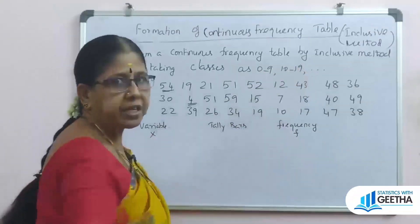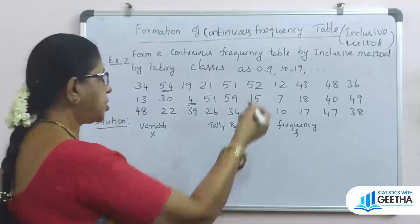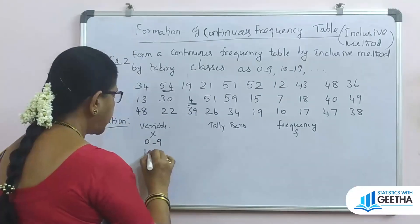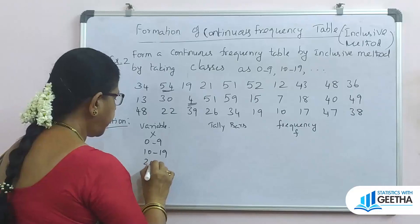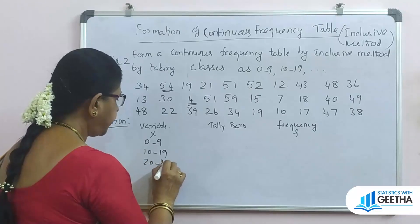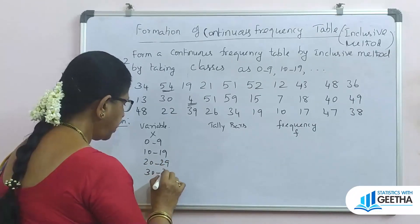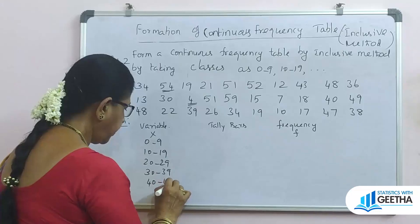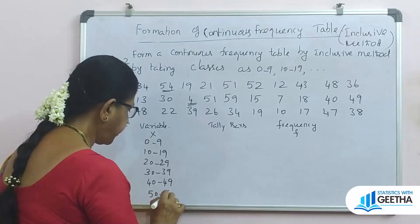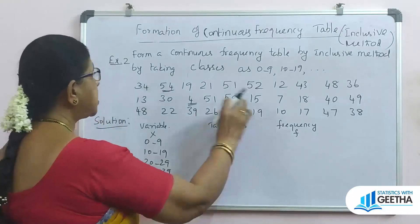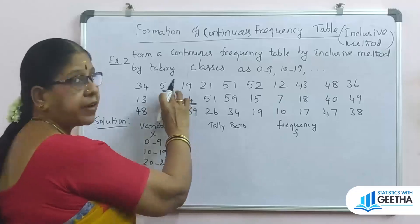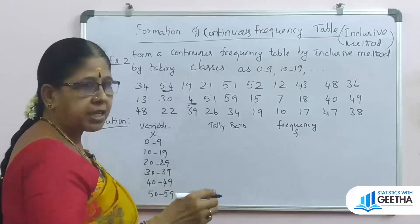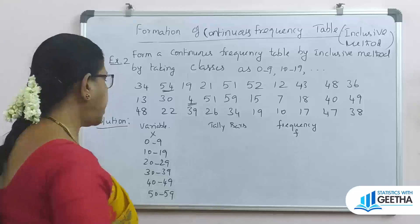The class intervals given are: 0 to 9, 10 to 19, 20 to 29, 30 to 39, 40 to 49, 50 to 59. Since 59 is the upper limit and the highest variable value is 54, it is covered. Like discrete, we place tally bars for each value into its class interval.